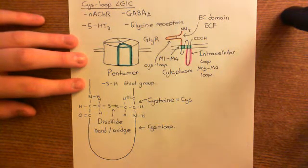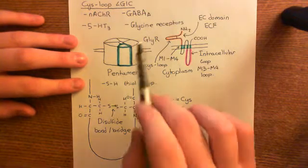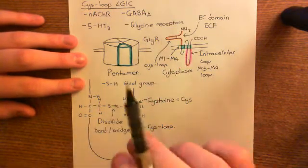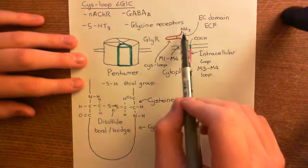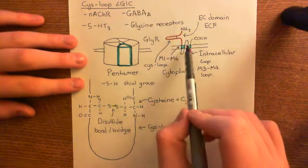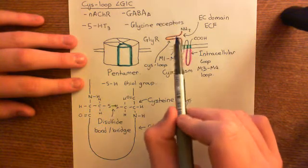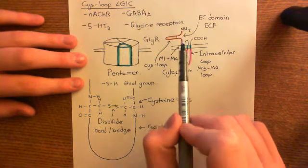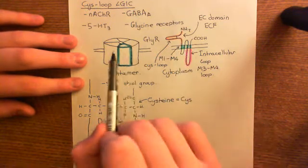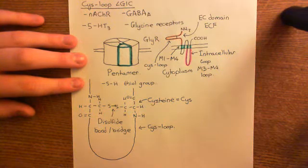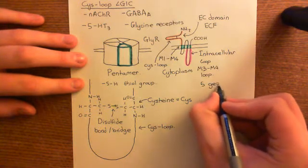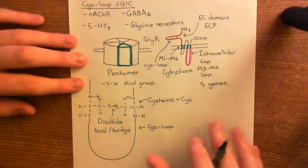So, the simple thing would be for there to be one glycine receptor gene in the human genome. And that would produce us a protein that have membrane-spanning topology like this. And the extracellular domain would bind glycine, and then all we'd have to do is make five copies of this protein and stick them all together, and we'd then have a glycine receptor. Unfortunately, it's not that simple. Instead, there are five genes encoding for glycine receptor subunits.